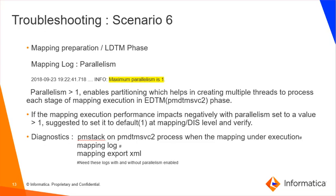The next phase is the parallelism phase, also called the partitioning phase, where a parallelism value set to greater than 1 enables partitioning, which helps in creating multiple threads to process each stage of the mapping execution in the EDTM phase. If the mapping execution performance is negatively impacted with parallelism set to a value greater than 1, it is suggested to set it back to the default value at the mapping or DIS level and verify if it improves performance. To troubleshoot parallelism-related issues, we need PMStack on the PMDTM SVC process when the mapping is under execution, the mapping log, and these two sets of logs collected with and without parallelism enabled, and lastly the mapping export XML.